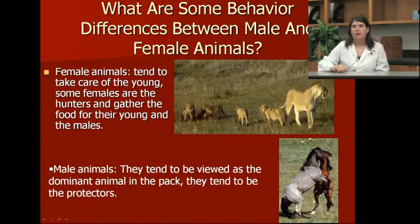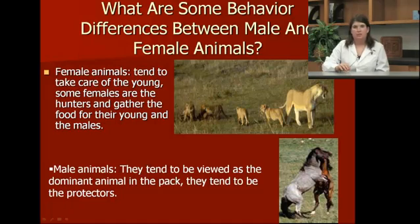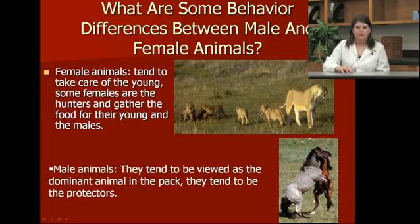Some differences between male and female animals: females tend to take care of the young, take care of the area where the family lives, and some are even the hunters and gatherers for the family. Males tend to be viewed as the dominant animal in the pack and tend to be the protectors. Where this is reversed is in horses — the mare or female horse is usually the dominant animal, leads the pack, is first to drink at a watering hole, and tends to be the protector.